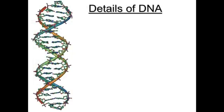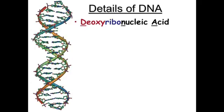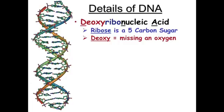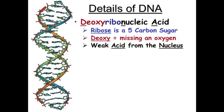That answers one little mystery, but let's look at this DNA molecule more closely. DNA stands for deoxyribonucleic acid. Ribose is a five-carbon sugar — the same root as the word ribosome. Deoxy means it's missing an oxygen, so the ribose molecule in DNA is deoxyribose, meaning it's short one oxygen. It's a weak acid from the nucleus.